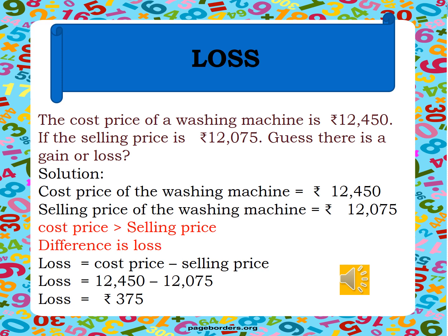Here we have the cost price greater than the selling price. As we all know, when the cost price is greater than the selling price, the difference is the loss. So, loss is equal to cost price minus selling price. Here we are going to subtract Rs. 12,450 and Rs. 12,075. So we have a loss equal to Rs. 375.